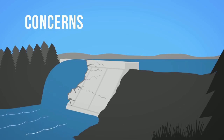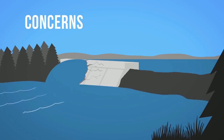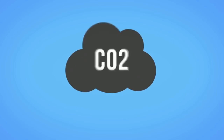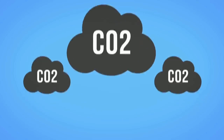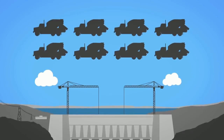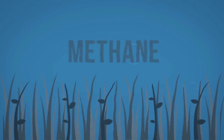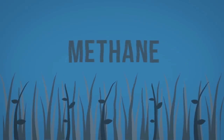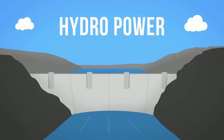In addition, dam failures can be catastrophic, claiming the lives of those living downstream. Hydro plants are also not completely free of greenhouse gas emissions. Carbon dioxide emissions happen during construction, particularly due to large quantities of cement used. Plant matter in flooded areas also produces methane, another greenhouse gas, as it decays underwater.